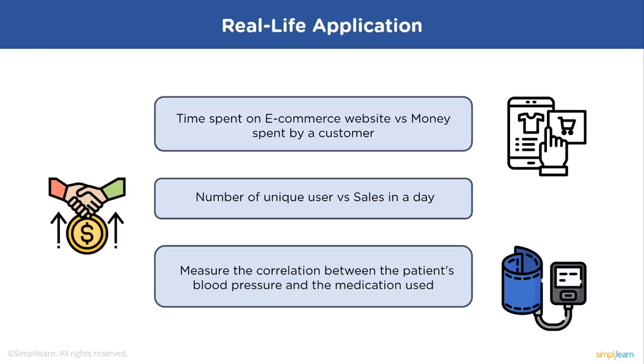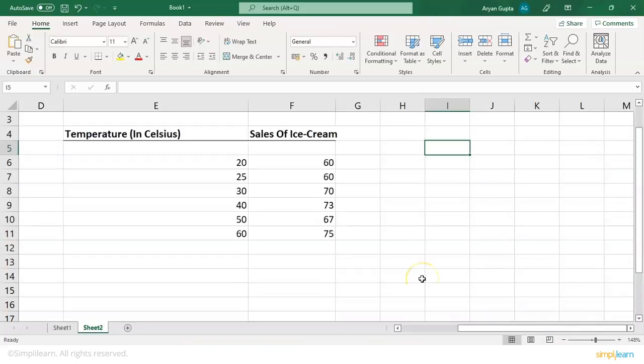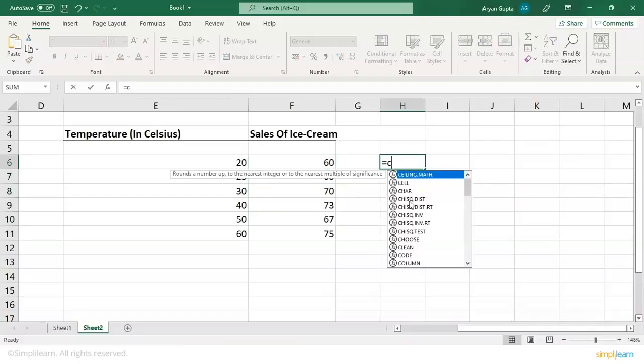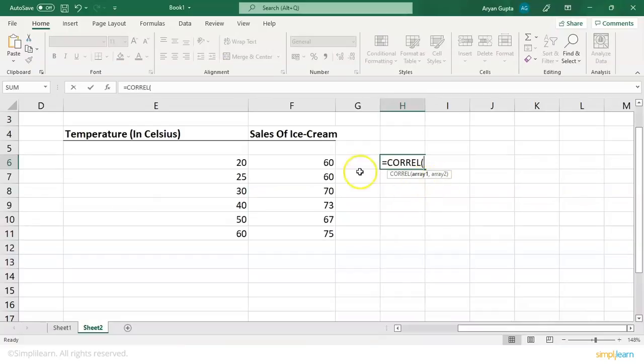Now let's jump onto Excel workbook to see how we can calculate the correlation coefficient. So here we are on the Excel workbook. If you see, we have the temperature in degrees Celsius such as 20, 25, 30, 40, 50 and 60, and the corresponding sales of ice cream in units. To calculate the correlation, we will use the Correl function. Now we have array 1 and array 2. So we will select array 1, that is temperature in degrees Celsius, and array 2 will be our sales of ice cream. So you can see there is a very strong correlation between the temperature of a day and the sales of ice cream units. If the temperature increases, the sales of ice cream units increase, and if the temperature decreases, the sales of ice cream units decrease.